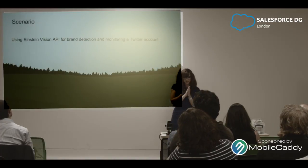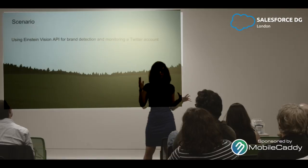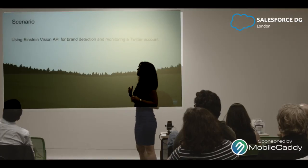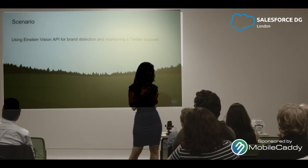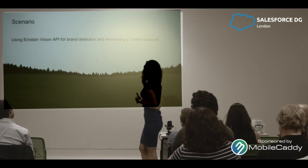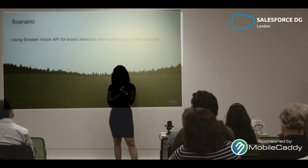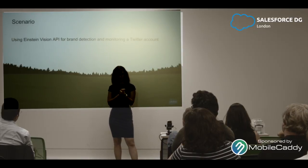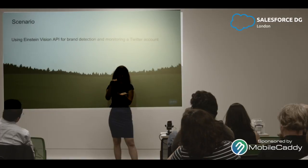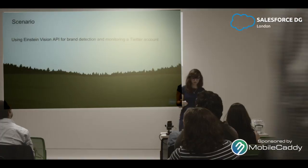My scenario — I want to make clear what I'm doing. It's not a fully functional application, it's just a demo. I'm going to use Einstein Vision API to try to detect brands from a few images posted on a Twitter account that I've created, to monitor what is posted and classify it. We will have a label and a probability of how close the image is to a certain label in the model.